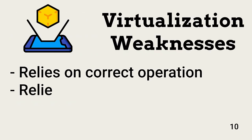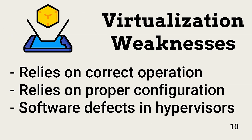The weaknesses in virtualization are the same as for all operating environments. The hypervisor and VMs must be appropriately configured and vulnerabilities efficiently managed. Strong access control must be enforced, and separation of duties applies to virtual environments. For example, personnel with access to configure and maintain hypervisors should not have control over VMs, and those with VM access should not be able to configure the underlying hypervisor.